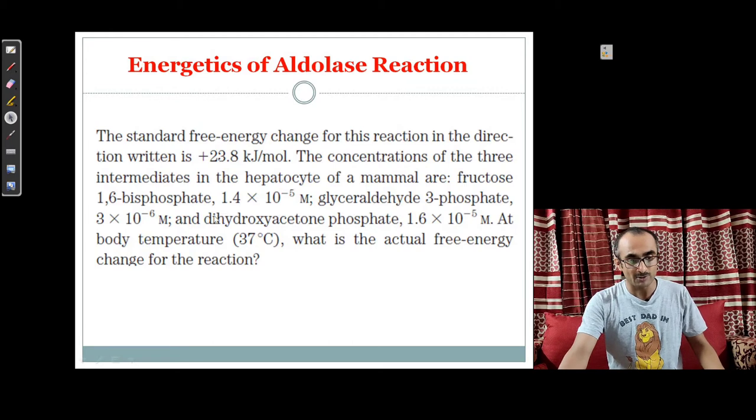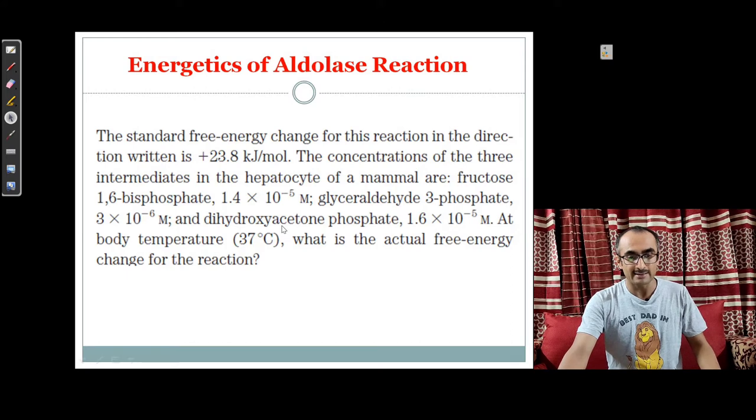Glyceraldehyde 3-phosphate is given as 3 × 10⁻⁶ molar, and dihydroxyacetone phosphate is given as 1.6 × 10⁻⁵ molar. This reaction is being catalyzed at body temperature, which is 37 degrees Celsius.